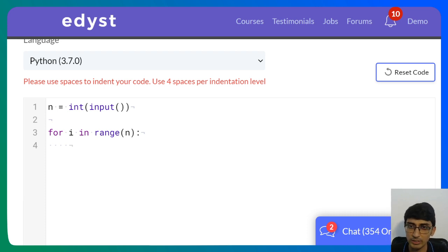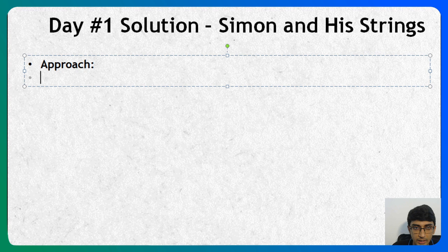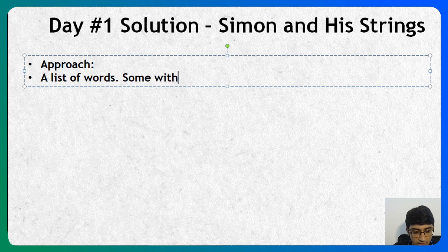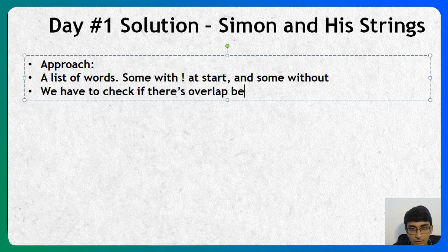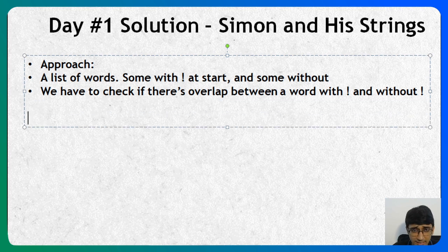Let me switch to the approach before going ahead with the code. We're getting a list of words as input — some with an exclamation at the start and some without — and we have to check if there is overlap between a word with exclamation and without exclamation.